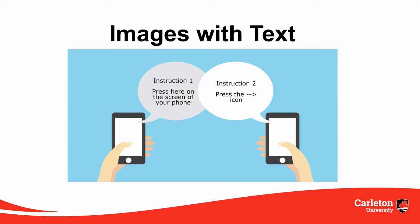Here's another example of text used in an image, where the text is vital to the image's meaning. Like the previous example, the information in this image should be conveyed in the text content of the page instead. Rather than use alt text, describe the instructions in the image in the surrounding text, including any information conveyed through the visuals. With this information included in the body text, the image can then be removed or the alt text left blank, since any information the image contains is already included in the body text.